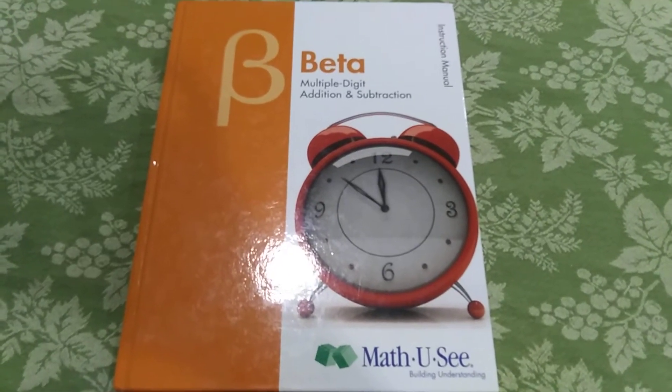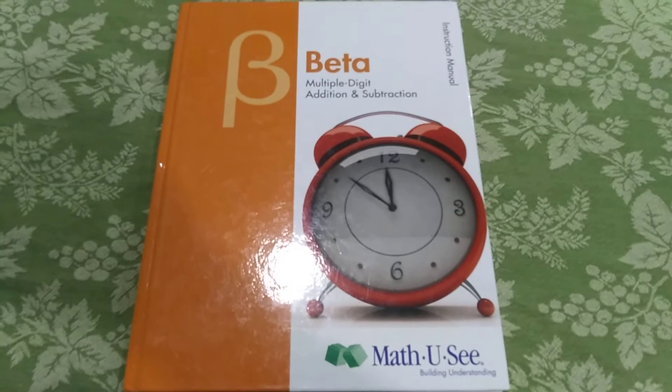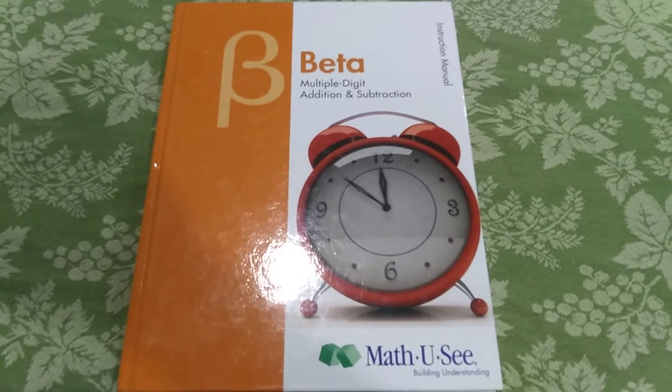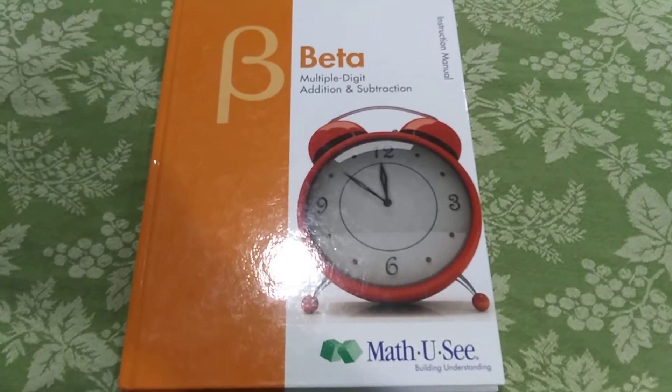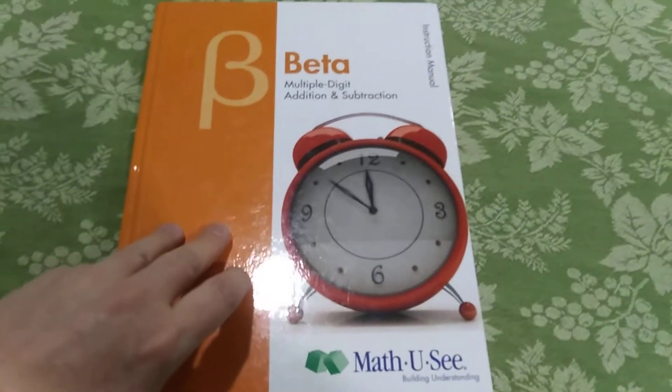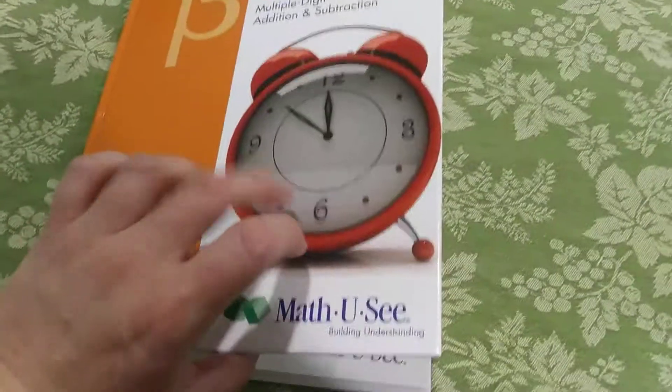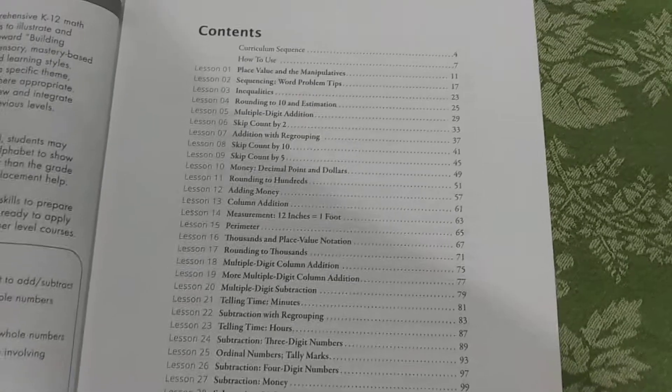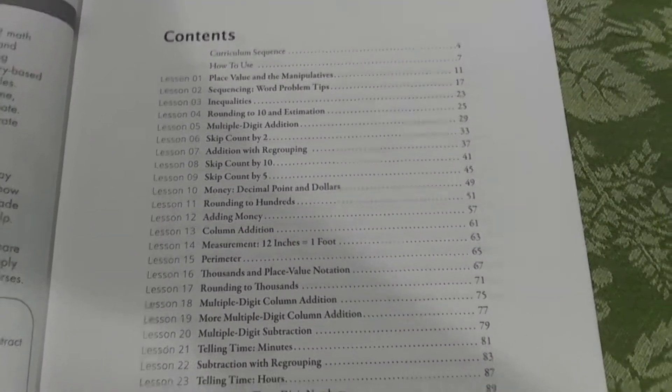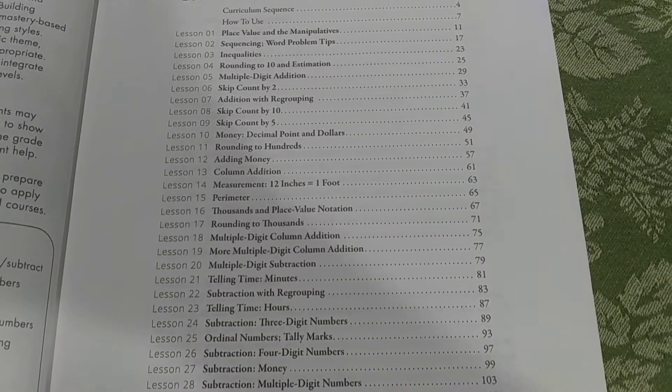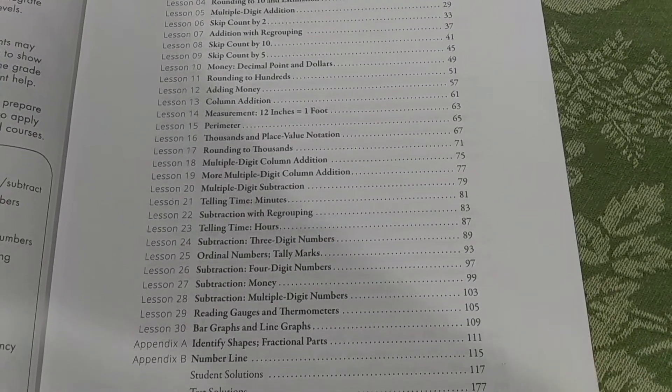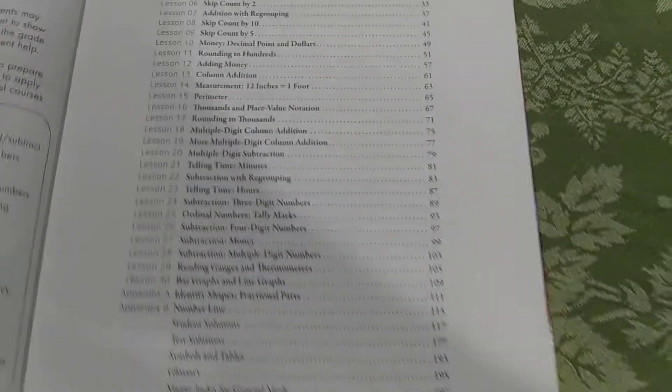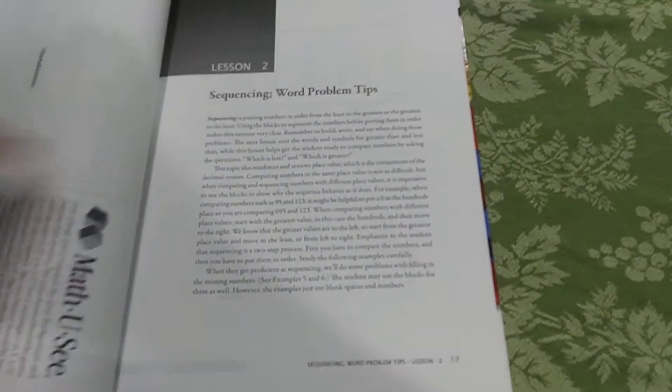Okay, this one is the Beta level, which a lot of people use for second grade. This is multiple digit addition and subtraction. This is the instructor's manual. I wanted to show you how cool these are. They are hardcover. And the contents are right here.